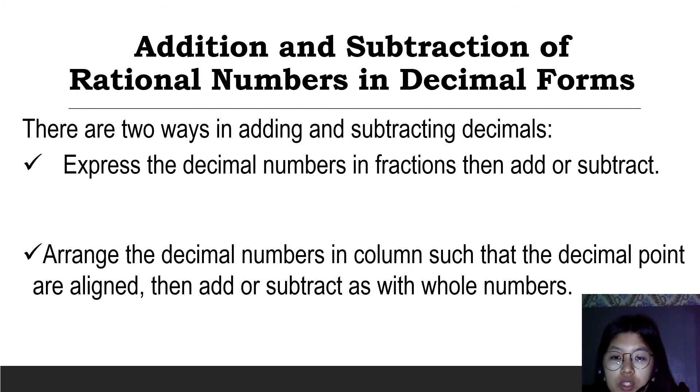I'll give an example of expressing decimal numbers in fractions, then add or subtract. For example, we have 3.75 plus 1.25. Express the decimal numbers as fractions. The fraction form of 3.75 is 3 and 75 over 100. Why 100? Because 0.75 has 2 decimal places, so we put two zeros.